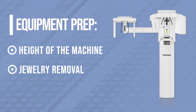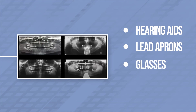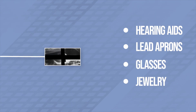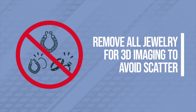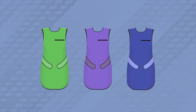Equipment prep can come down to the height of the machine, making sure that there is no jewelry to interfere with radiation causing scatter across your images. You also don't want any hearing aids, lead aprons in the way, glasses to interfere with the focal trough, or any other jewelry the patient may have on. Some jewelry such as higher studs in the nose or eyebrow may not interfere in the focal trough of 2D panoramic imaging, but you do want to remove them for 3D imaging as they can cause scatter. Use of lead aprons may have different laws depending on your jurisdiction — please check with your local laws to see if they're applicable.